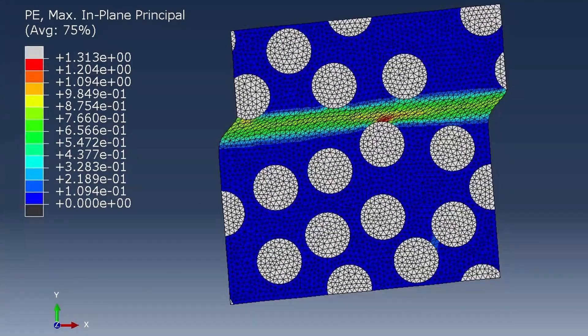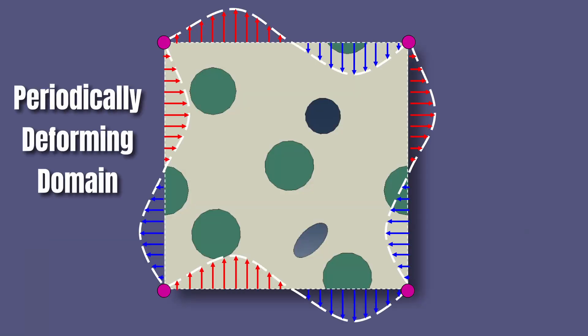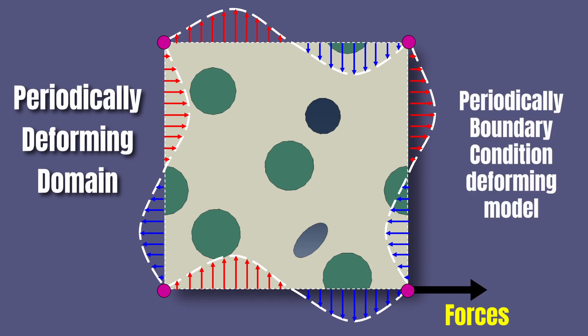Most of the time when you're working with periodic boundary conditions, at least the way that I try to show it, you always apply displacement on your model. But that's not always the case - you may also have to apply forces, temperature, or velocity. In this video, I'm going to show you how you can impose forces in order to simulate periodic boundary condition deforming models.